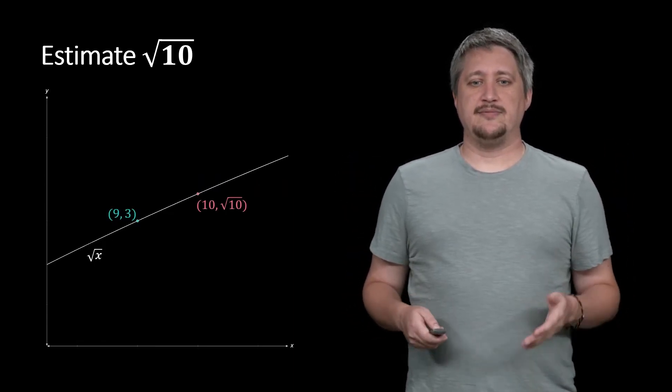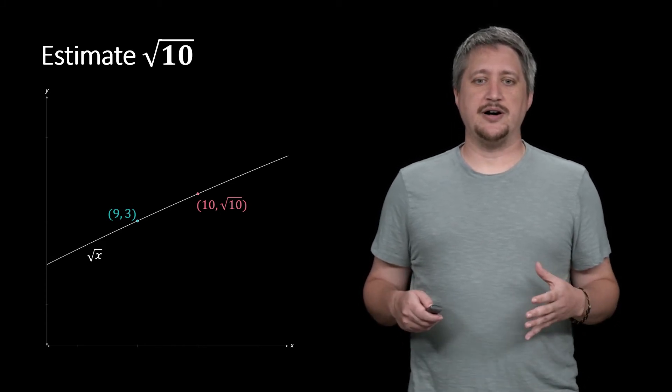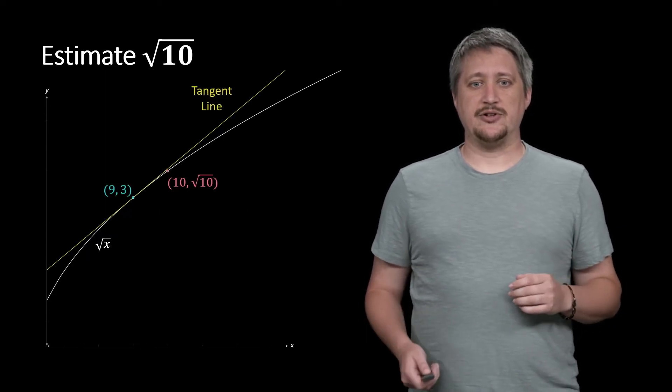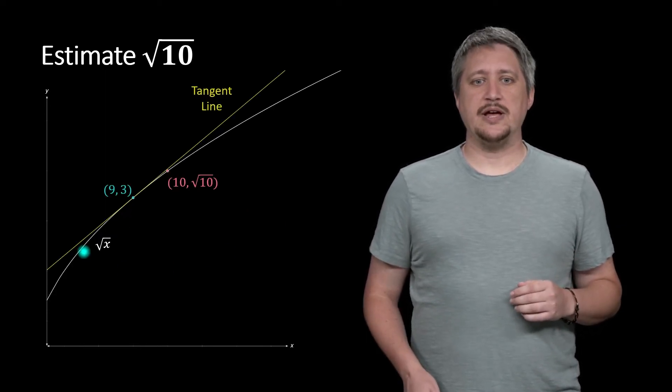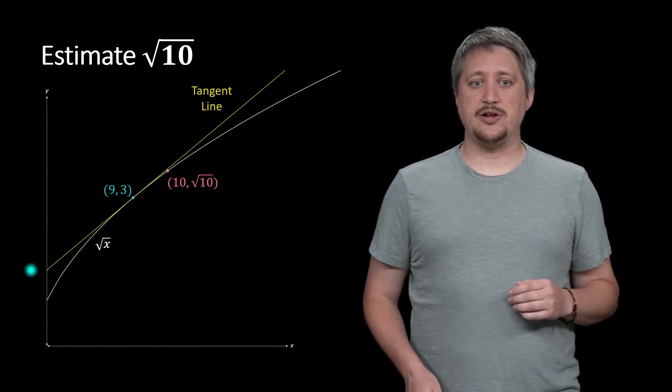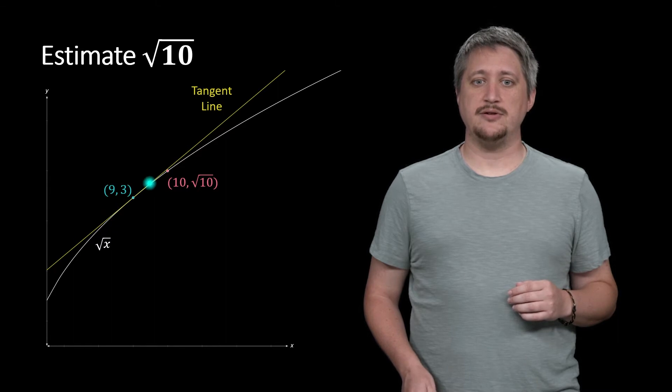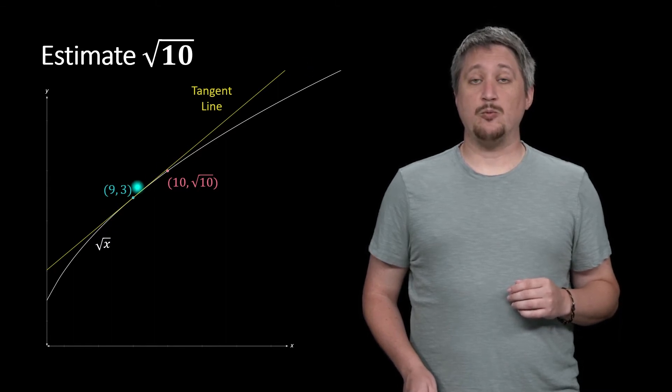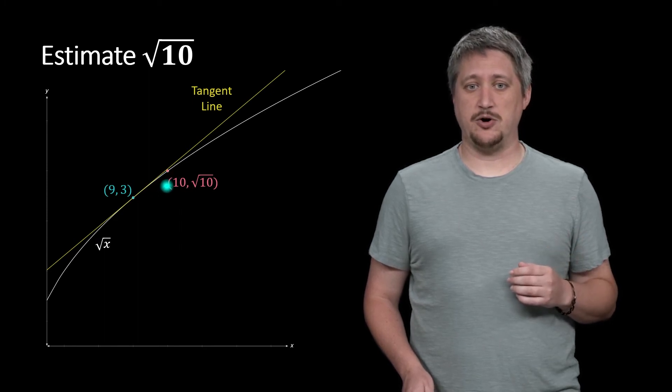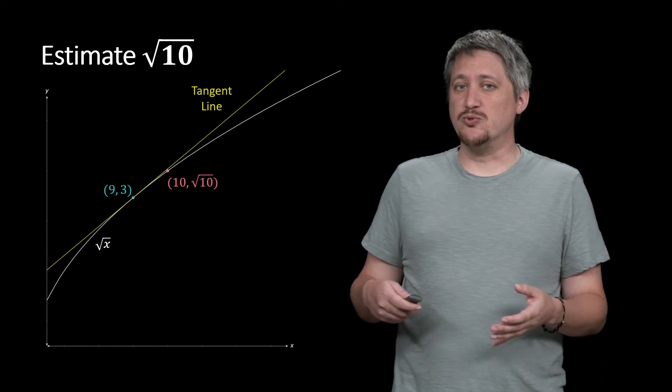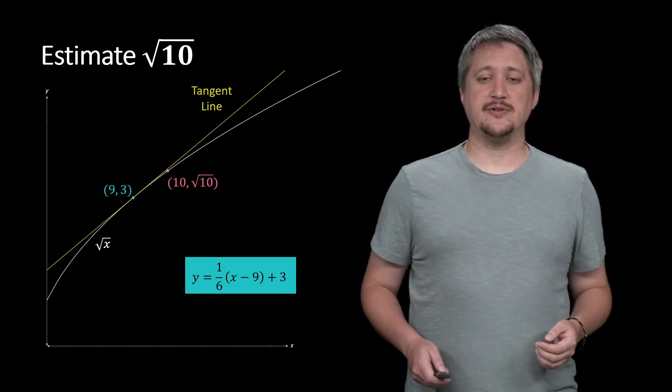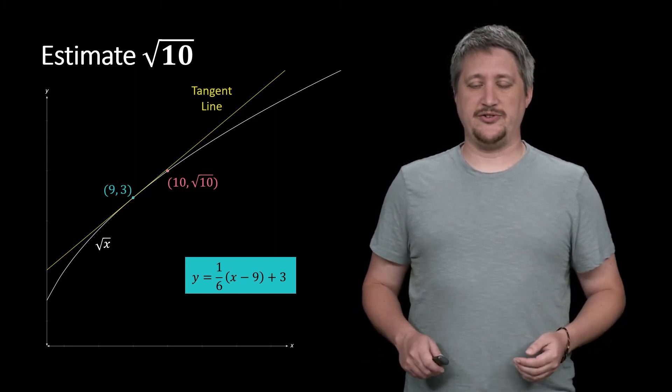The way we would do that, zooming in here, is that we would start by trying to get this tangent line idea. In particular, we have the point where we can find it, this 9 comma 3. And then we can get a tangent line through that point. And we can calculate the actual formula for that line. Now notice it doesn't hit the spot that we want, but it seems to be relatively close. So if we calculate that formula, we get this tangent line, y equals one-sixth x minus 9 plus 3.